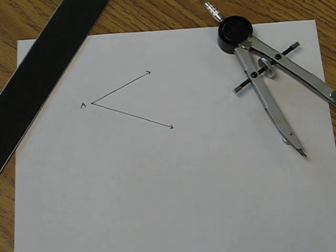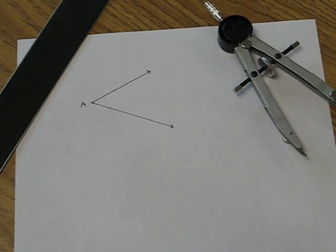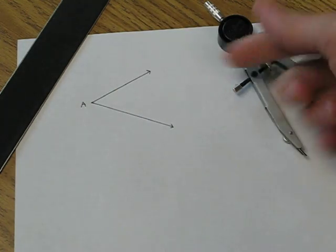Alright, this construction is of an angle bisector. So we have an angle here, and we want it cut in two equal pieces.